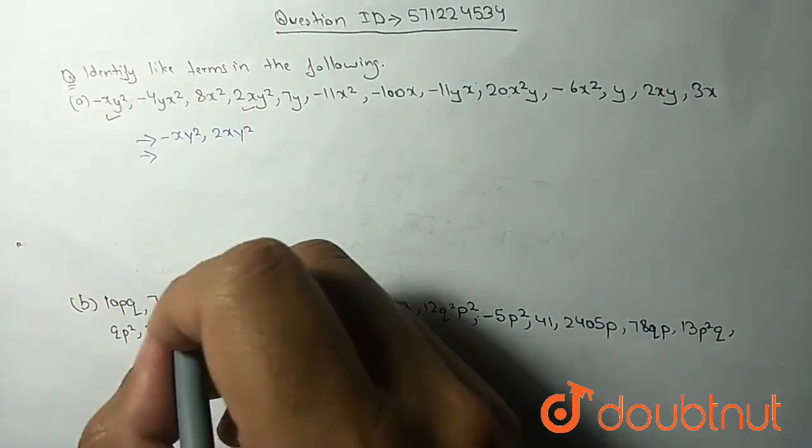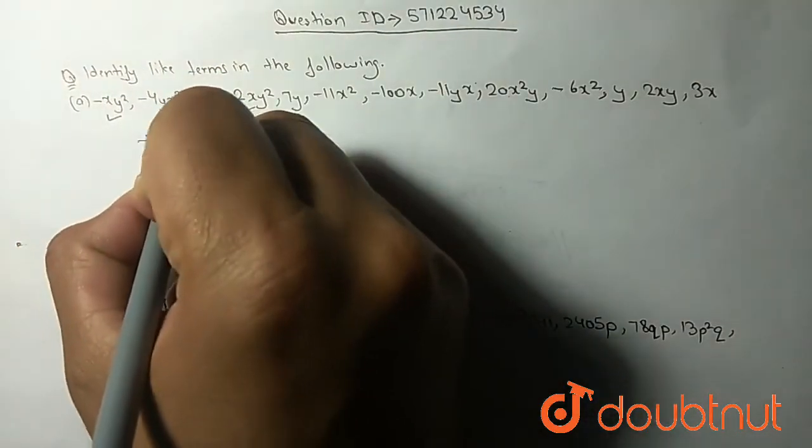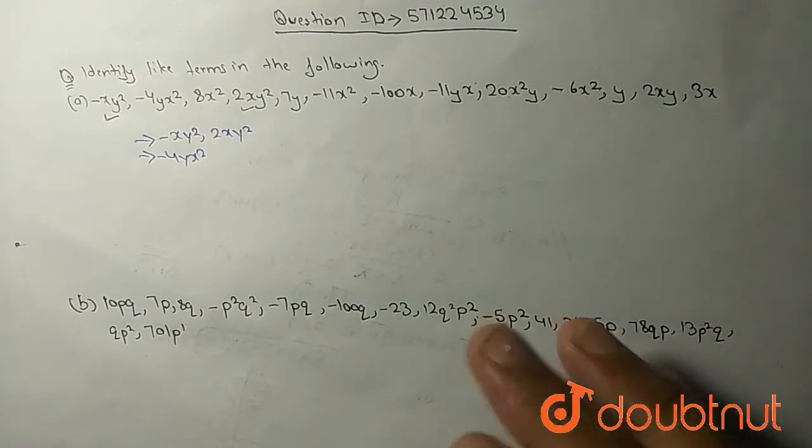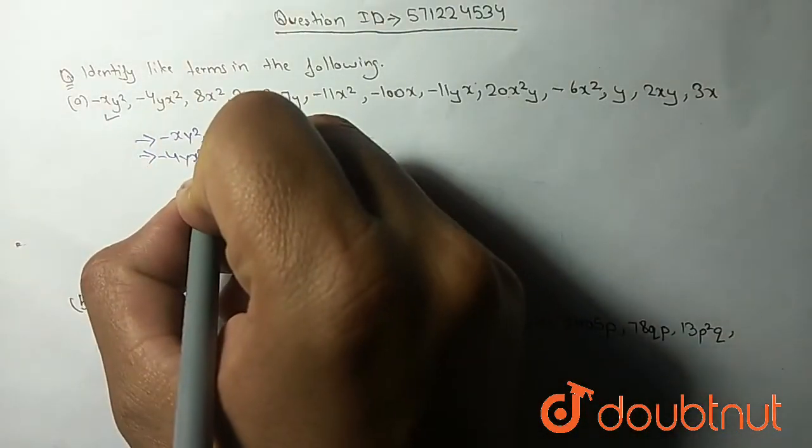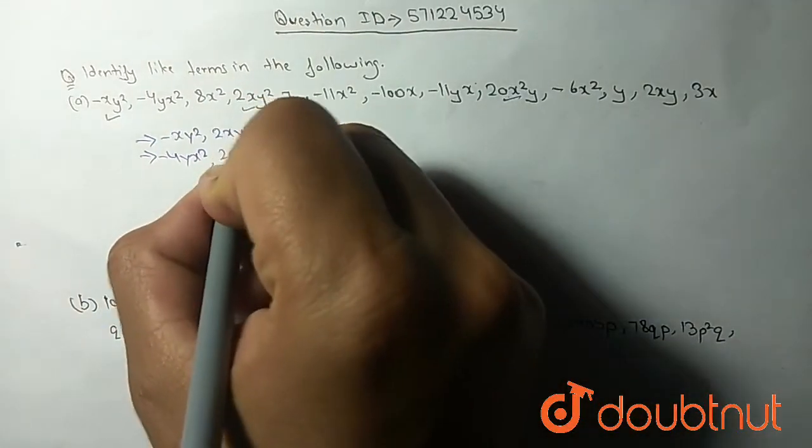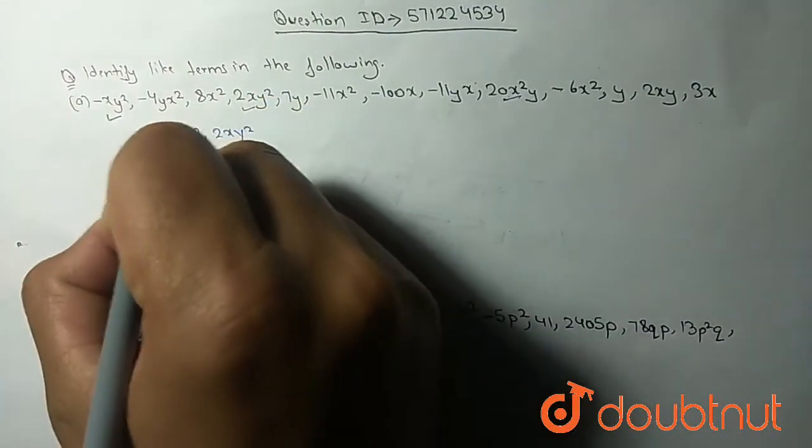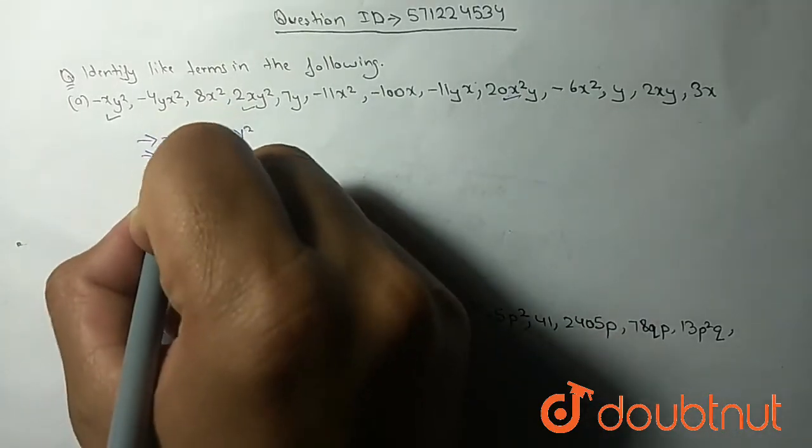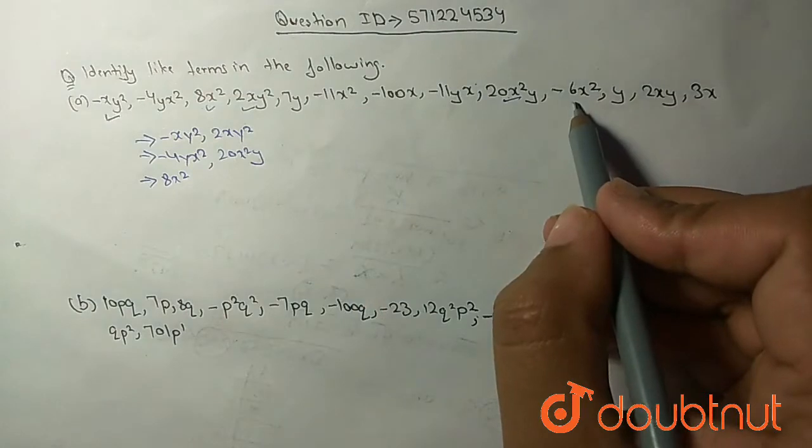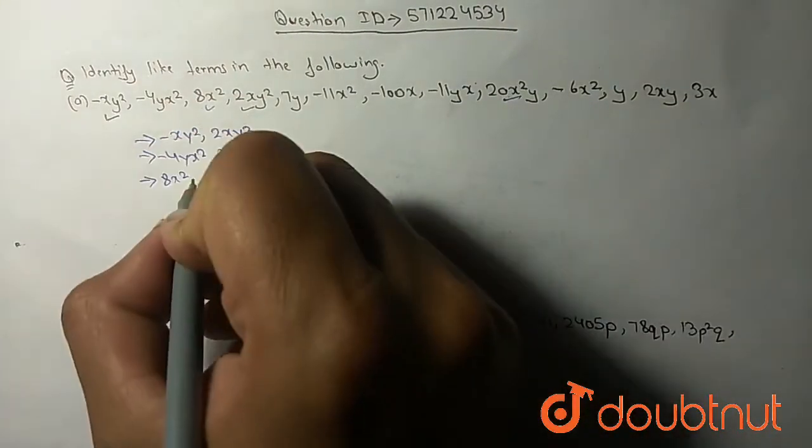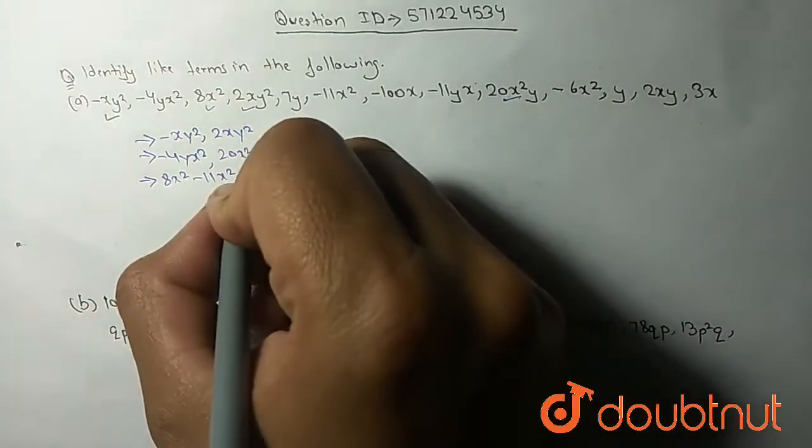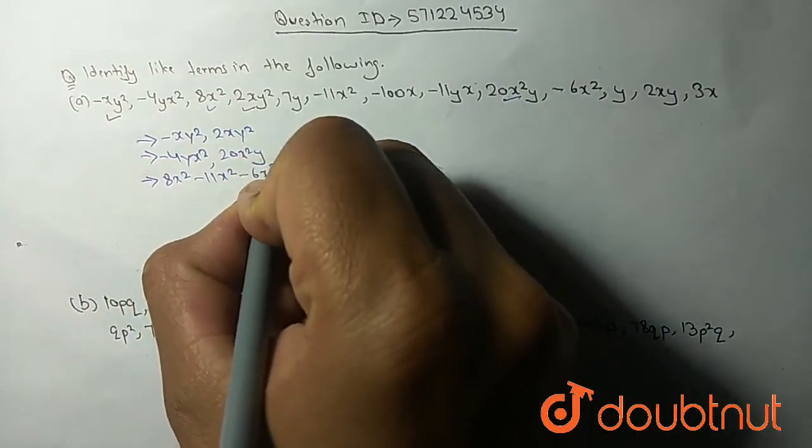Second term is minus 4yx squared and 20x squared y. Third term is 8x squared and another is minus 11x squared and minus 6x squared.